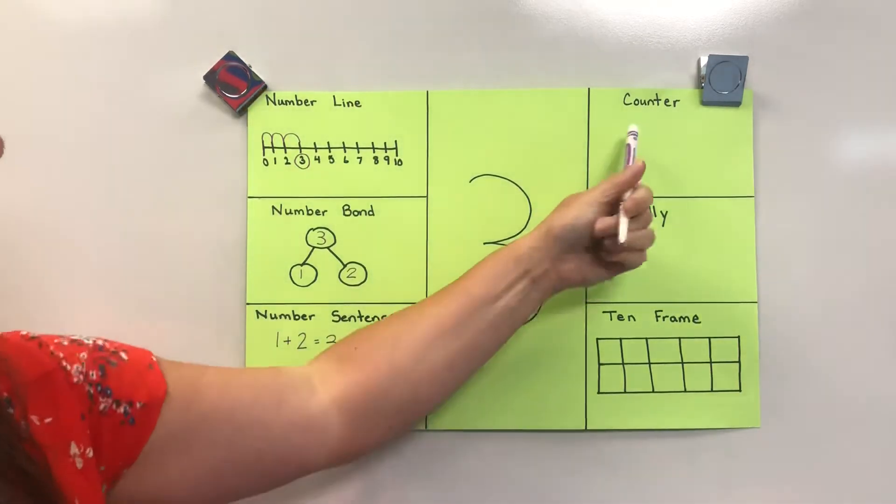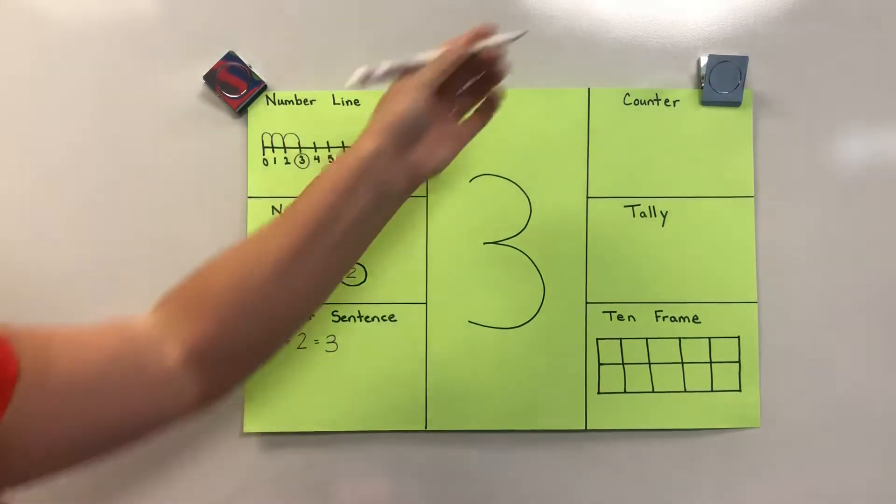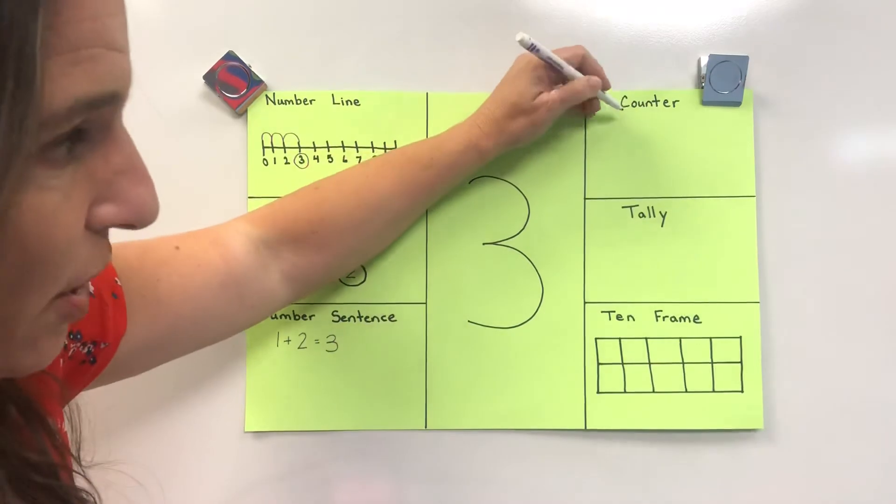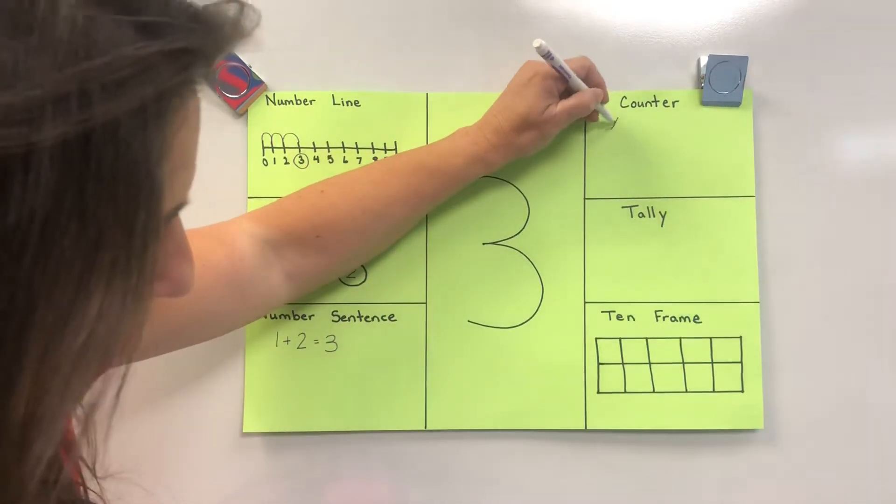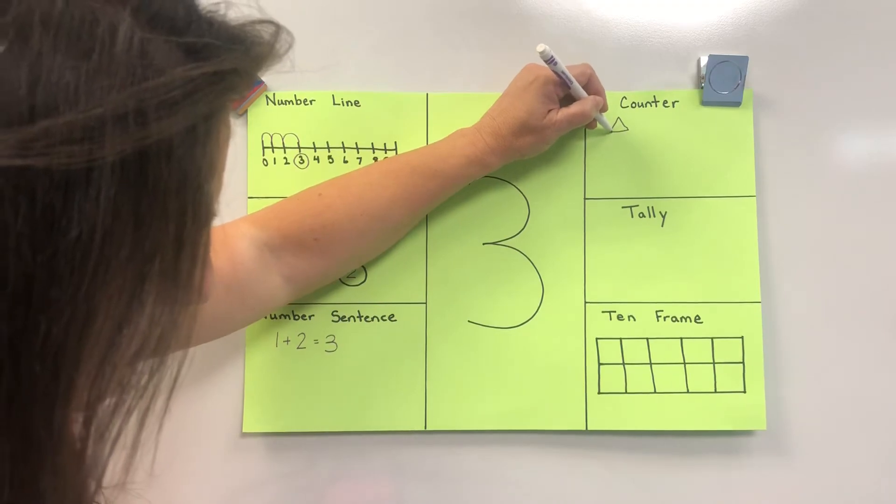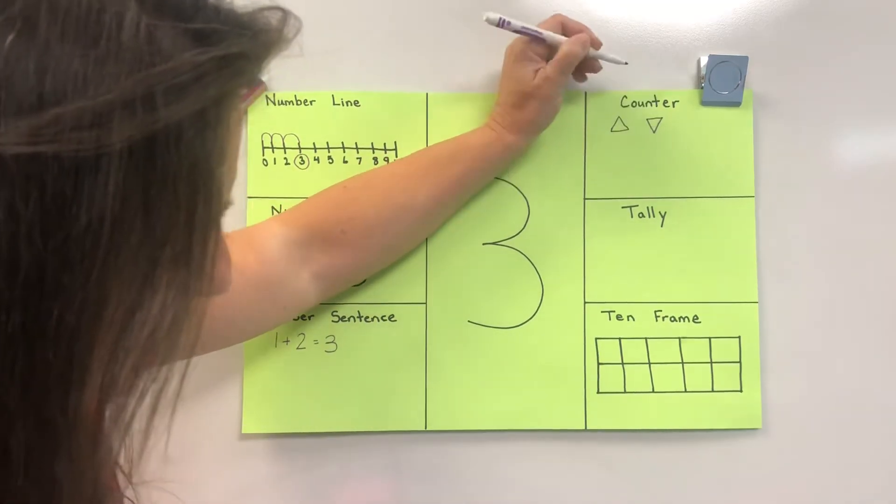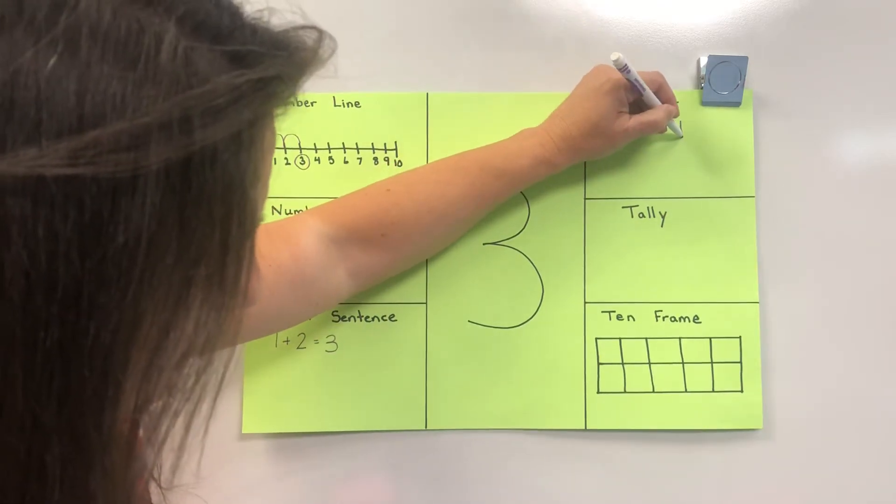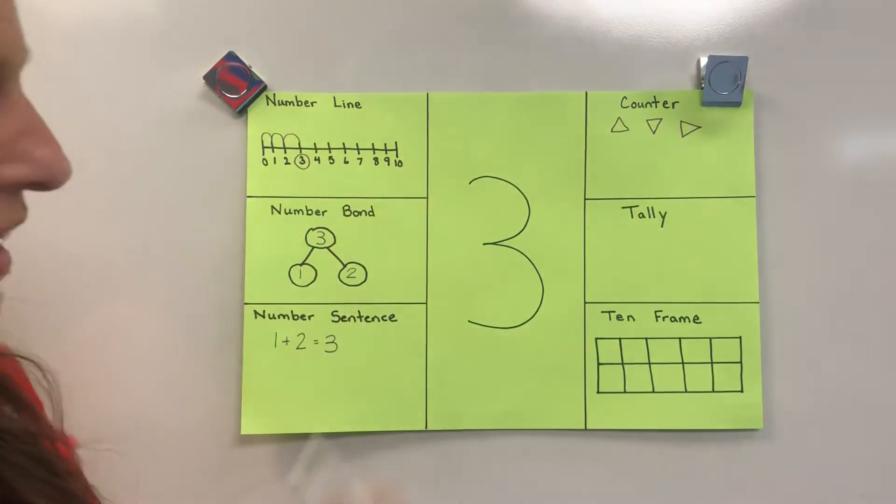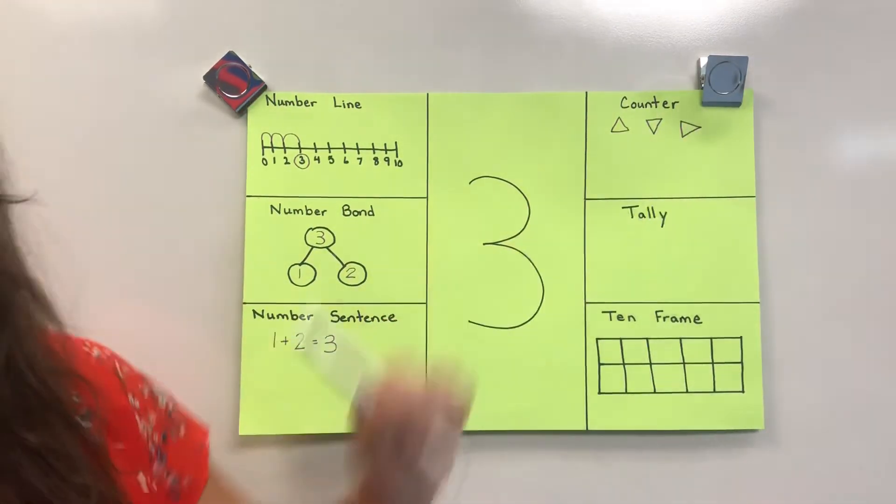Over here for counters, since we're doing triangles this week, I thought it might be fun to make three triangles. You could draw anything over here. So that's one, oops, and maybe I'll make one upside down, two, and three. I have them going all different directions, but there are three of them. One, two, three triangles.